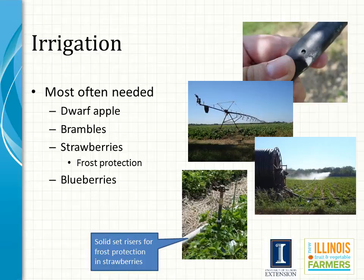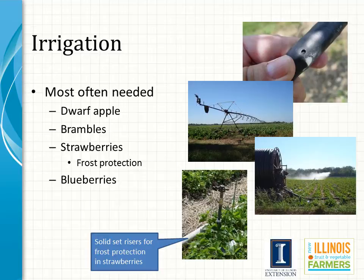Uneven precipitation can cause plant stress during critical growth periods, which will affect both crop productivity and fruit quality. Most fruit crops require irrigation to minimize plant stress. Proper timing of water applications can increase the yield and quality of most fruit crops in Illinois in most years. Drip and overhead irrigation are the most common throughout Illinois. Overhead irrigation can also be used to provide frost protection for certain small fruit, particularly strawberries. A properly designed and operated sprinkler system can provide frost protection for strawberries down to 22 degrees Fahrenheit or lower.